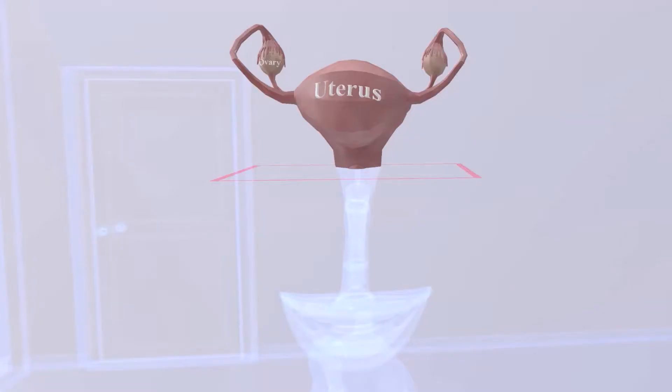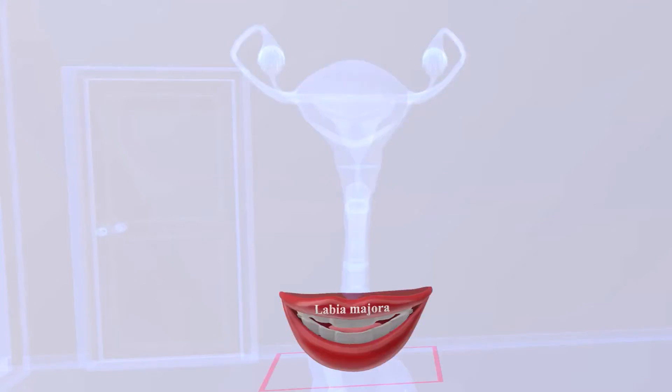Here we have the uterus with the two ovaries, followed by the cervix, and then the vagina. And finally, the labia majora, which means bigger lips.